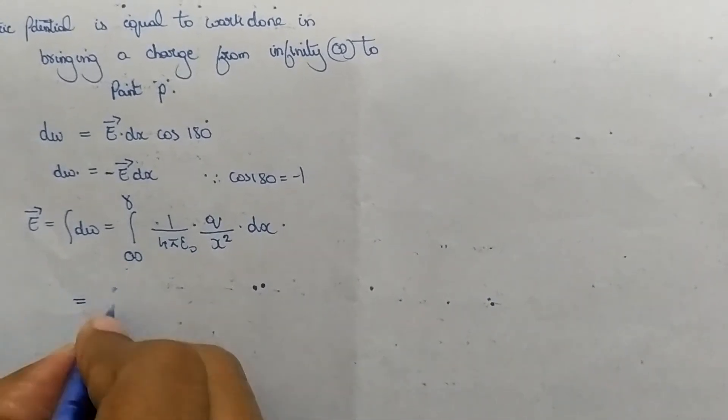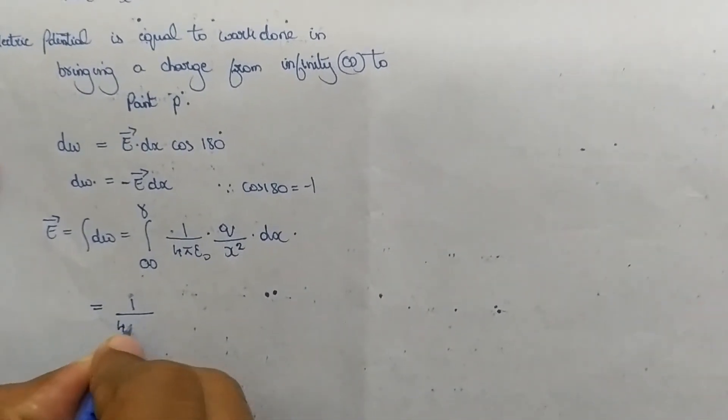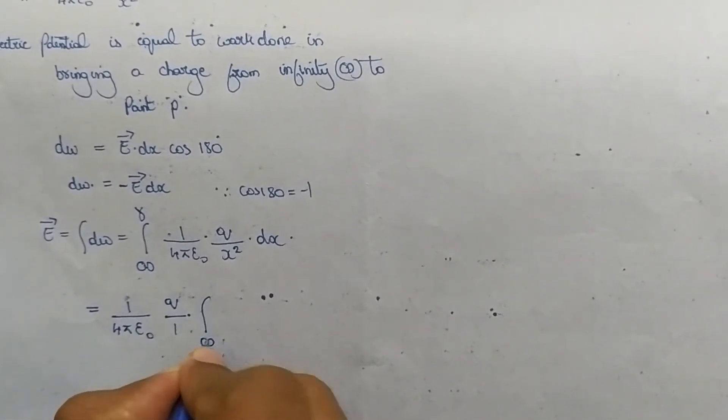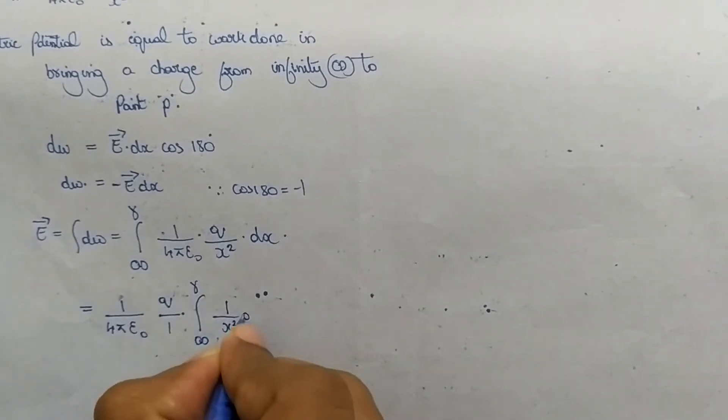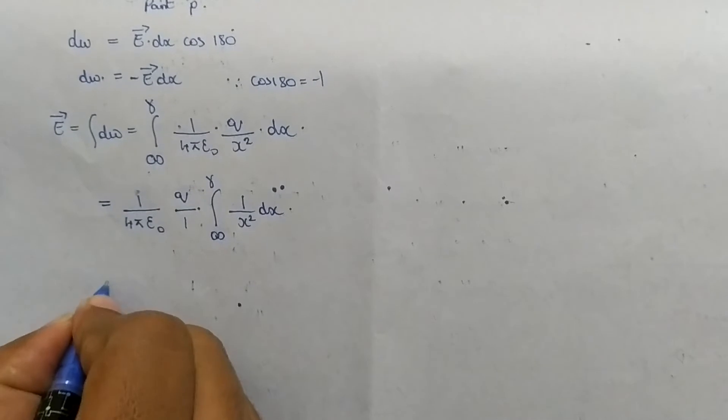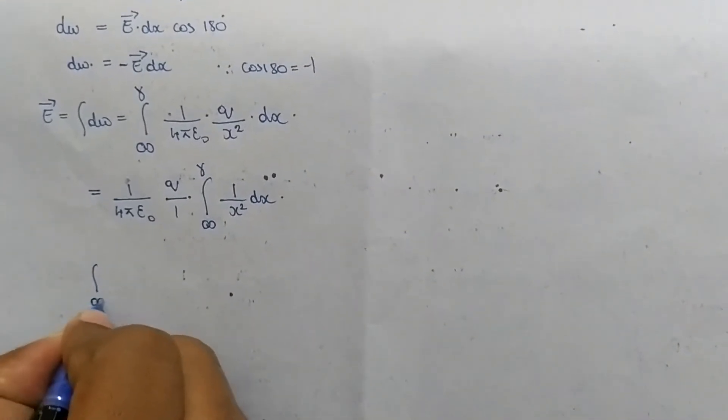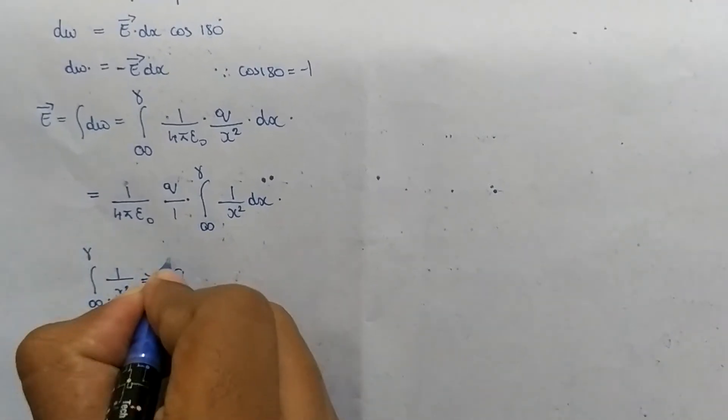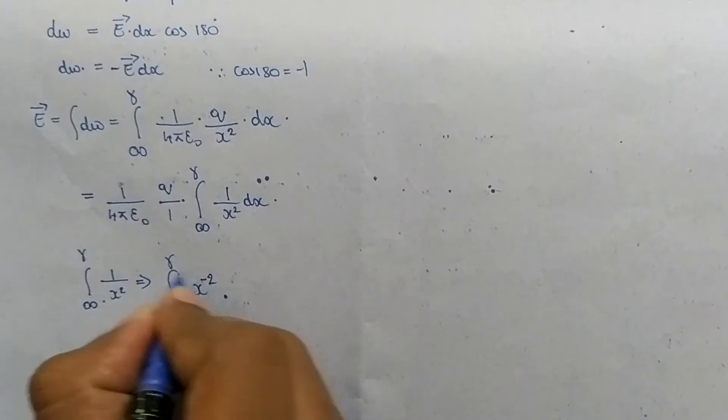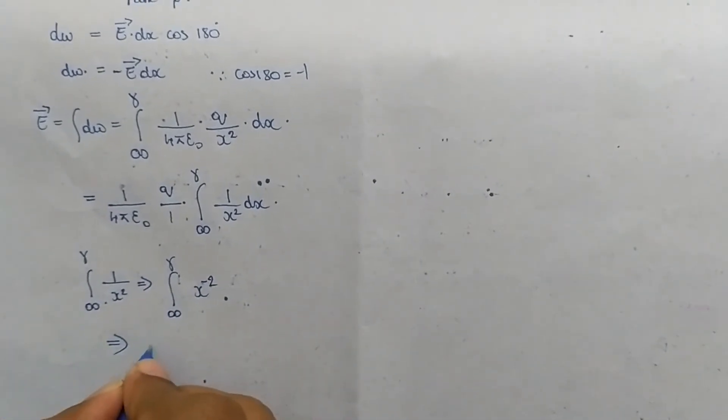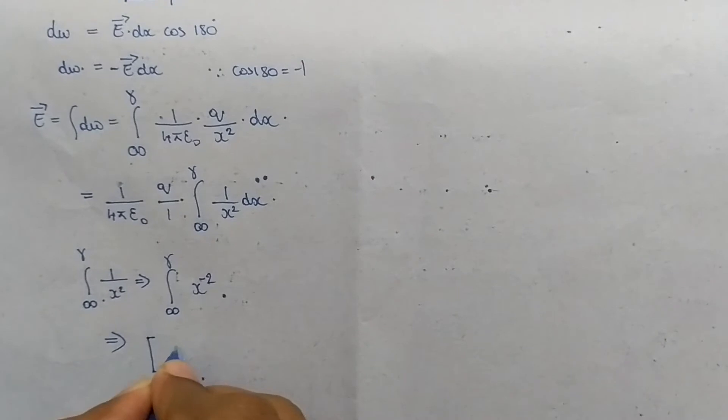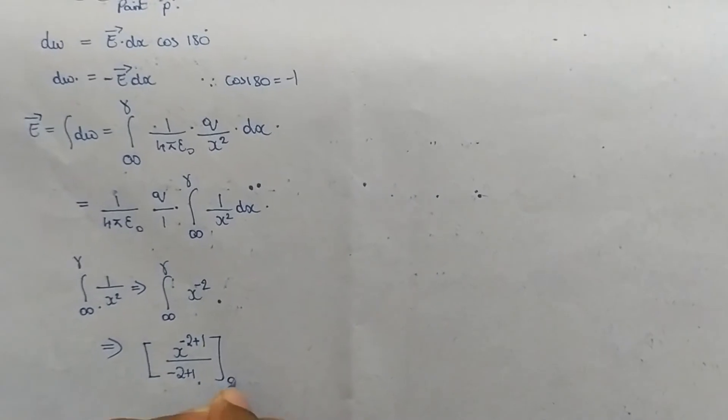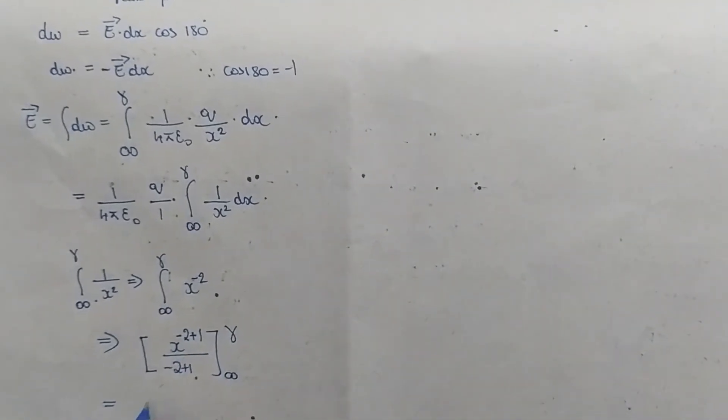For integrating we must take all the constant outside. On taking constant outside Q, we remain with 1 by x² dx. We all know that integration from infinity to r of 1 by x² is given by -1/x from infinity to r.